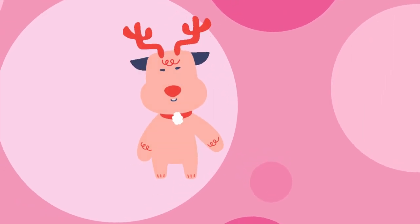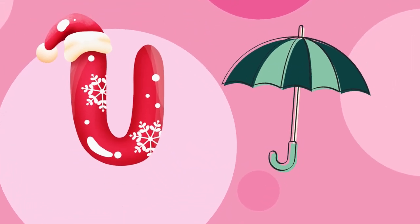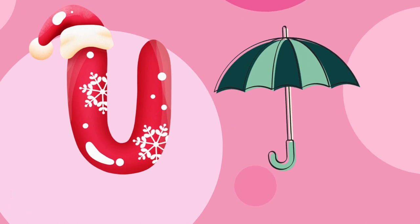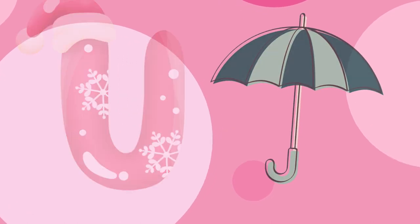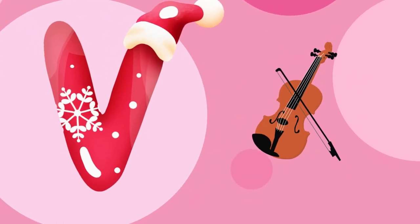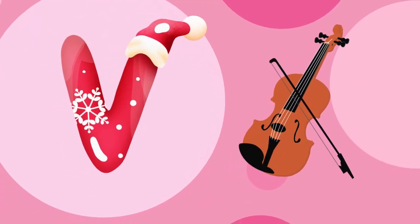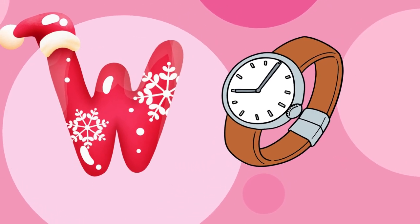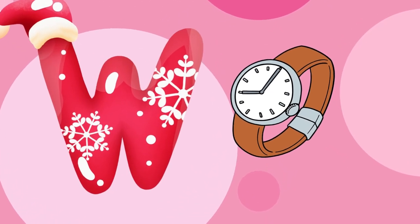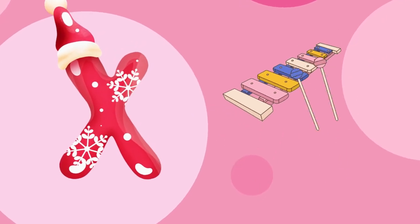U is for umbrella, u-u-umbrella. V is for violin, v-v-violin. W is for watch, w-w-watch. X is for xylophone,